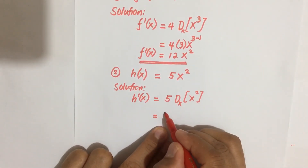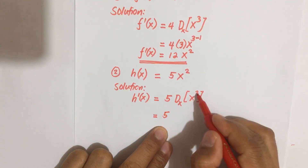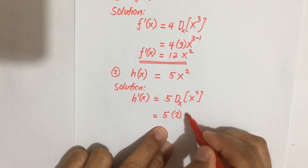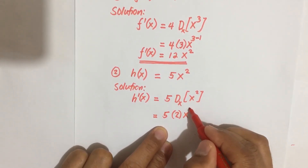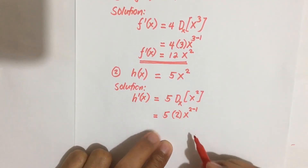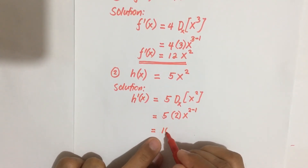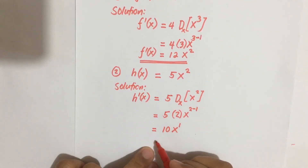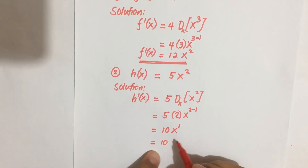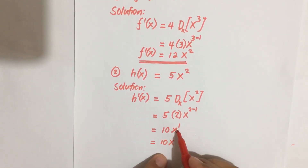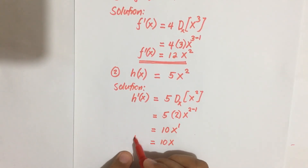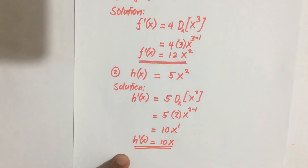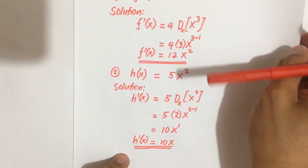Applying the power rule: 5 times — bring the power 2 down and multiply with the base x, then the exponent is 2 minus 1. So this equals 5 times 2, which is 10, times x to the power one. Since the exponent is 1, the final answer is 10x.